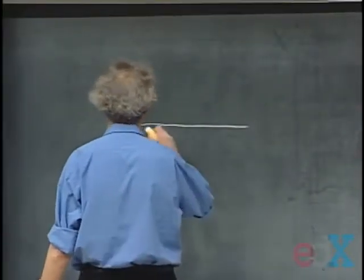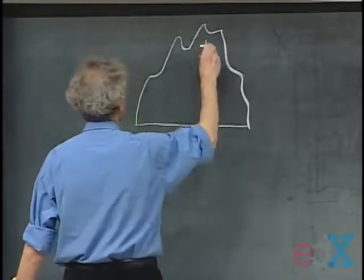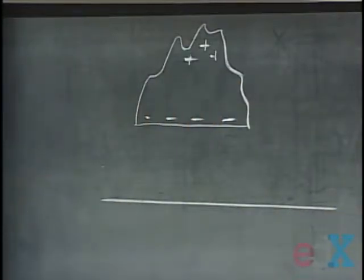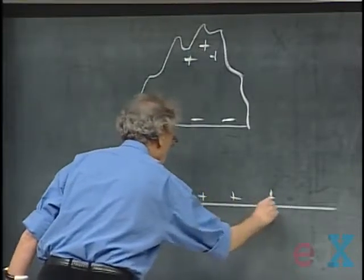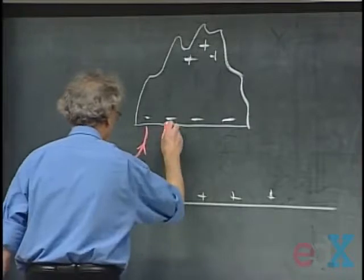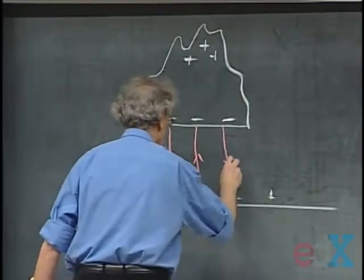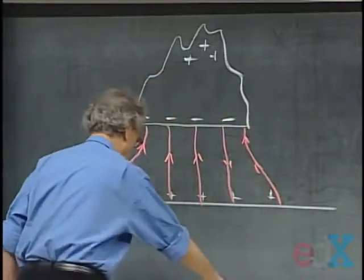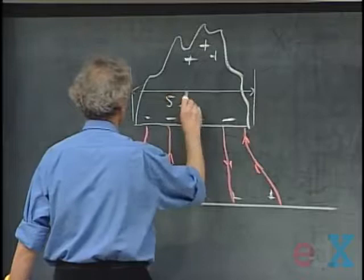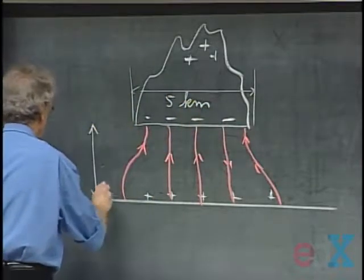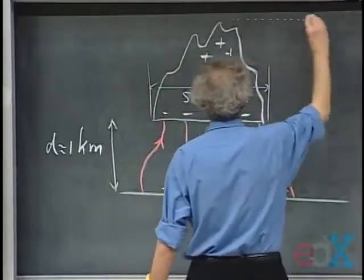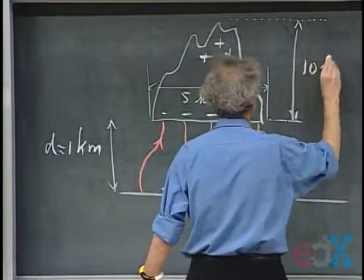The cloud has positive charge at the top and negative charge at the bottom. Because of induction, the earth beneath becomes positively charged. Electric field lines go from the earth to the cloud, perpendicular to the equipotentials. Typical dimensions: the cloud might be about five kilometers wide, the vertical distance d between the cloud bottom and earth is about one kilometer, and the cloud height is about ten kilometers.